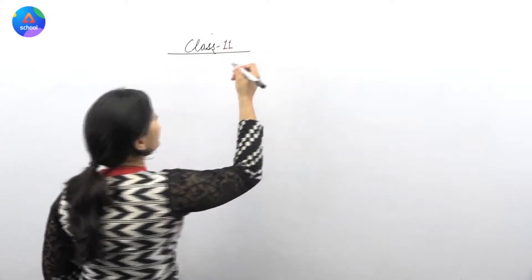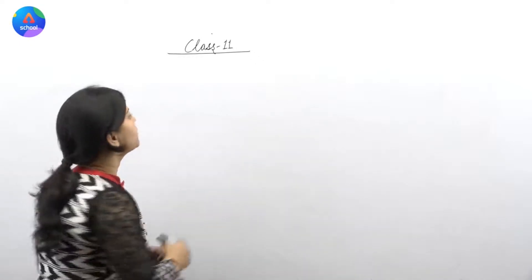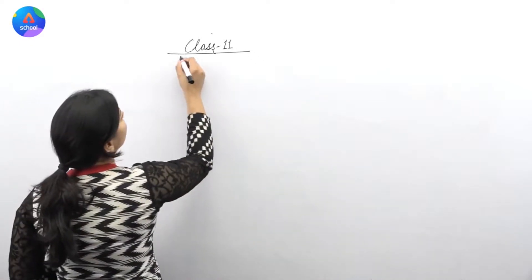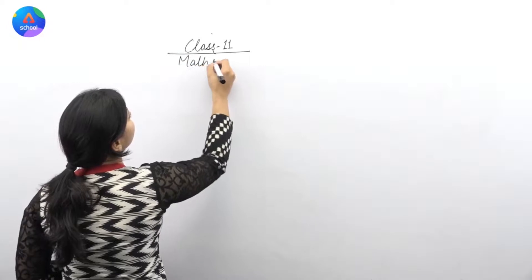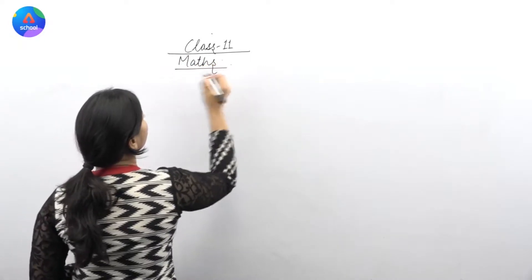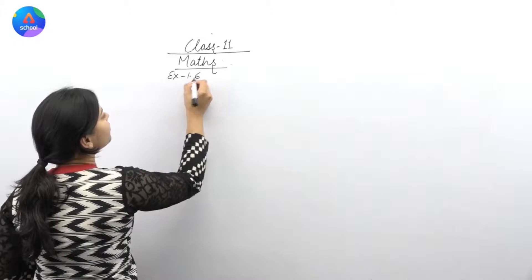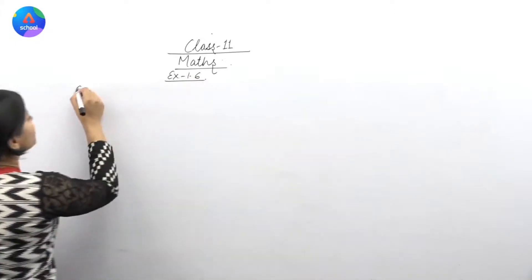In this exercise, we have union and intersections related questions. So, start with question number 1.